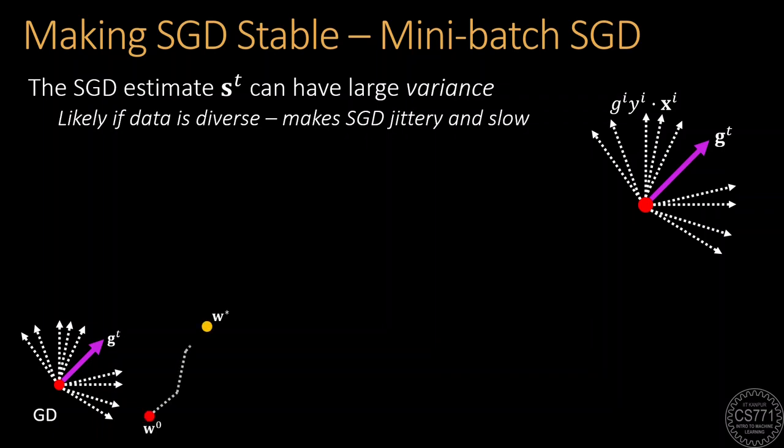In this cartoon, the red point is the initial model and the golden point is the optimal model. We see that despite the large cost of each iteration, GD makes targeted progress towards optimality. SGD, on the other hand, trusts a single data point to get a descent direction. Although this is cheap, this cartoon shows that this can cause SGD to take a very meandering and jittery route to the optimum.